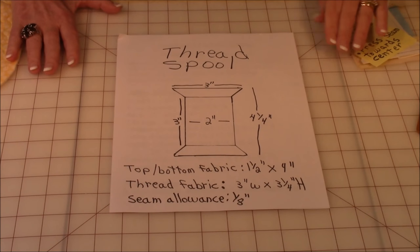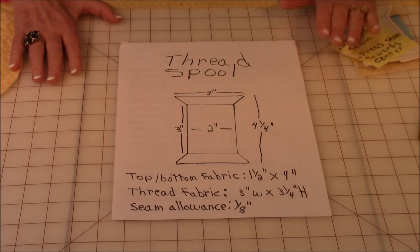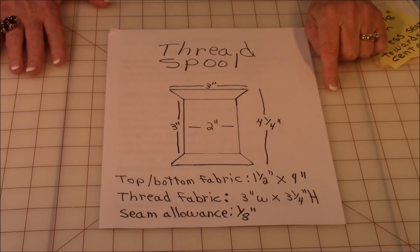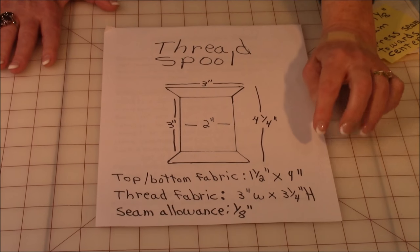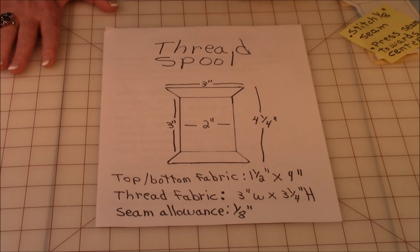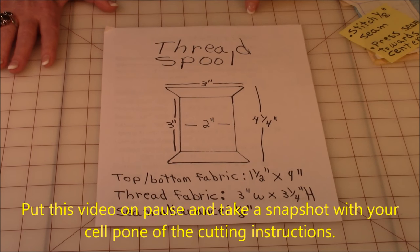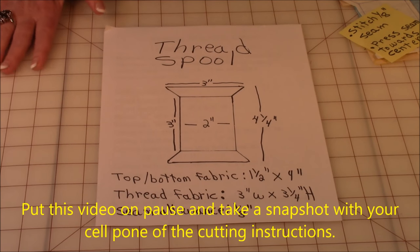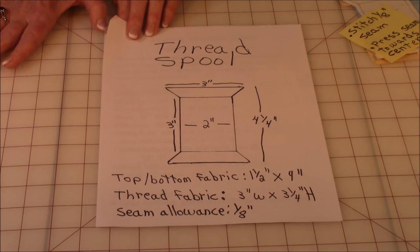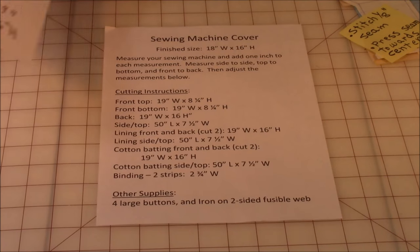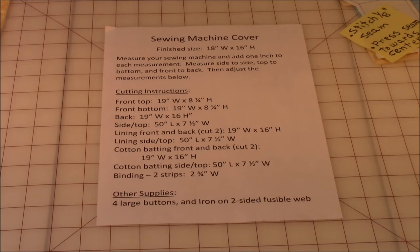Here is the drawing for the template to make for your spool. Then also down here, it tells you the measurements of fabric to cut to make each spool. So if you have a cell phone, put the video on pause, take a snapshot of this sheet so you know what to make. Or you can just write this all out yourself. And then here are the cutting instructions.